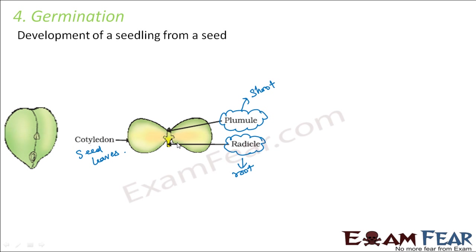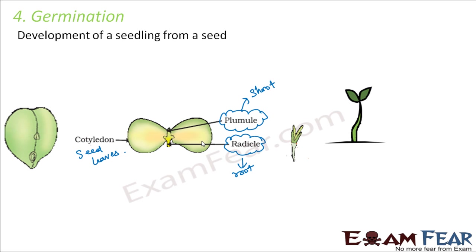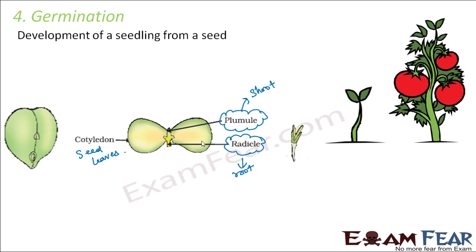The embryo formed from the zygote is also present inside the seed. This embryo remains dormant — inactive — for a very long time, but when favorable conditions return, the embryo forms a seedling, which in turn forms the plant. A lot of nutrition is stored inside the seed to support the embryo when it wants to grow. The seed gradually forms a seedling, and the seedling gradually grows to form a new plant.